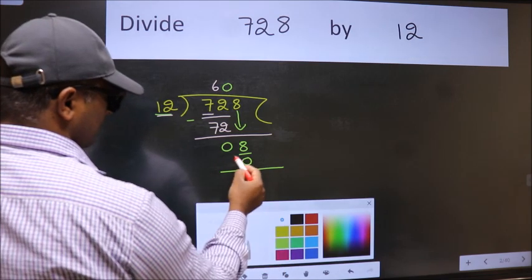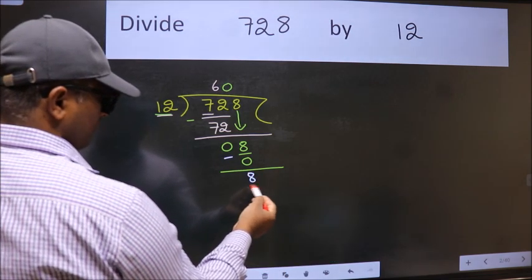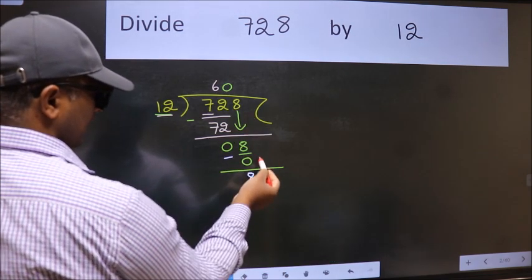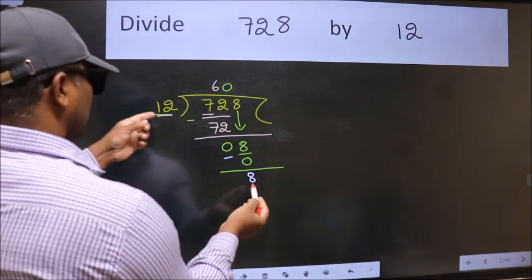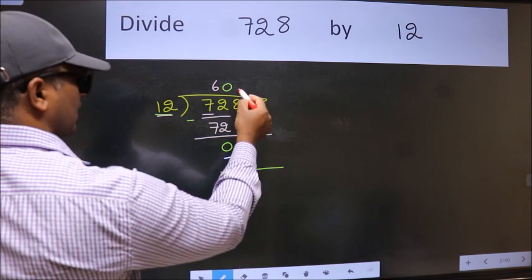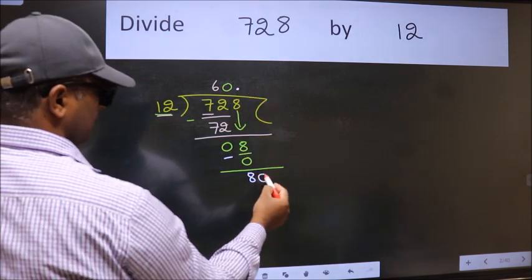Now we subtract. We get 8. Over here, we did not bring any number down, and 8 is smaller than 12. So now we can put dot and take 0.